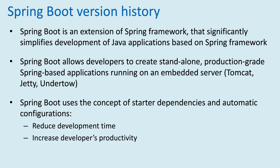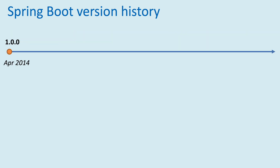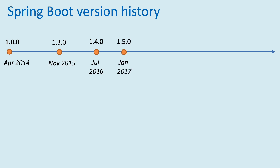The first official version of Spring Boot, version 1.0.0, was released in April 2014. The first version of the 1.3 branch, version 1.3.0, came in November 2015. The first version of the 1.4 branch, version 1.4.0, was released in July 2016, and the first version of the 1.5 branch was released in January 2017.